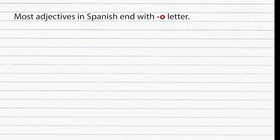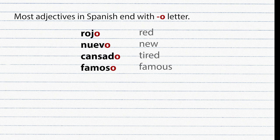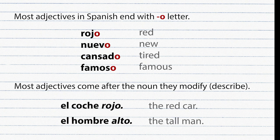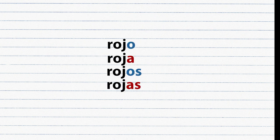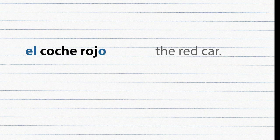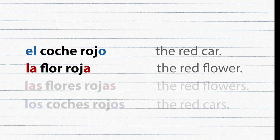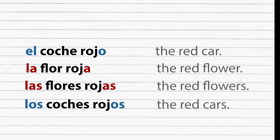Most adjectives in Spanish end with the letter O — for example: Rojo, Nuevo, Cansado, Famoso. Most adjectives also come after the noun they modify. Examples: El coche rojo, El hombre alto. Adjectives ending in O have four possible endings and must agree with the noun in gender and number. For example: El coche rojo (masculine singular), La flor roja (feminine singular), Las flores rojas (feminine plural), Los coches rojos (masculine plural).